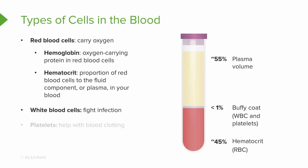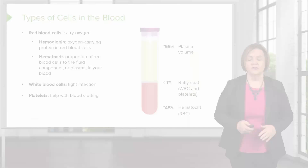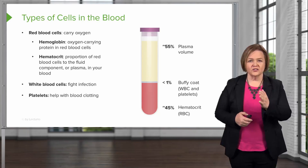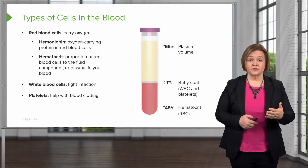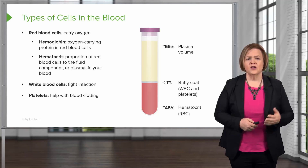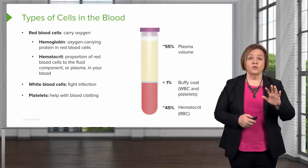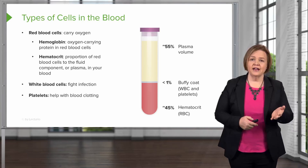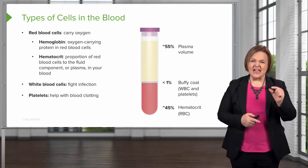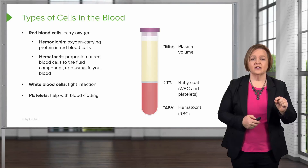The white cells are the infection fighters — that's what they do. And the platelets help with blood clotting, which is a good thing. Remember our trauma patient? We want their blood to be able to clot so we can stop the bleeding and hemorrhaging and hold on to their blood volume. To recap: 55% of your blood is plasma, 45% is packed red blood cells, and less than 1% is your white blood cells and platelets.